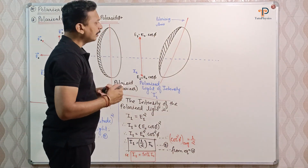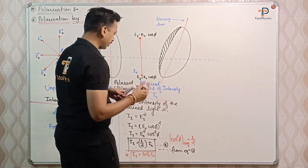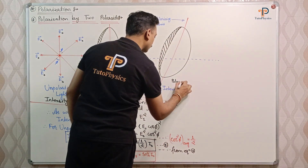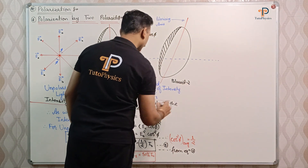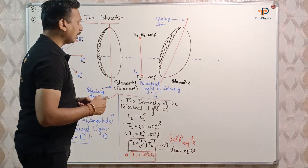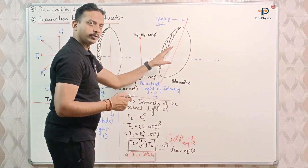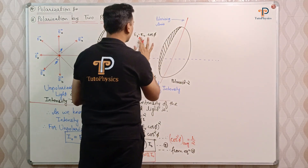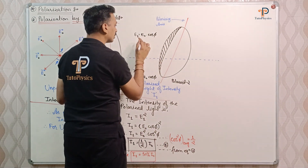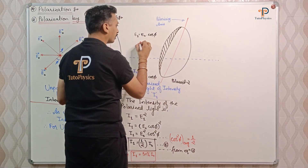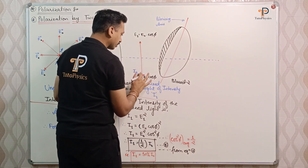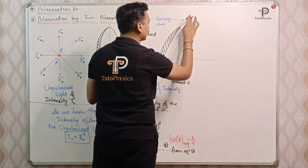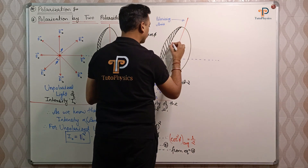Ab hum second polarizer ko elaborate karte hain. Yeh Polaroid 1 hai aur yeh Polaroid 2 hai. The output of the first polarizer becomes the input for the second polarizer. Main electric field vector ka component thoda sa chhota karta hoon so that we can easily understand it. Toh yeh jo electric field vector hai, woh yahan par aayega — like this.